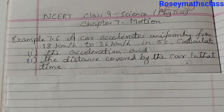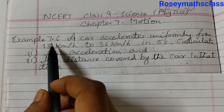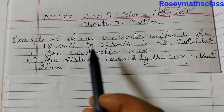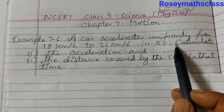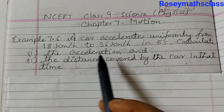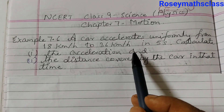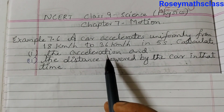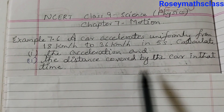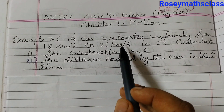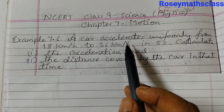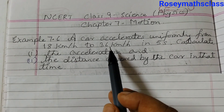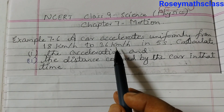Hello everyone, in this video we shall discuss example number 7.6 of class 9 science physics, chapter 7 motion. A car accelerates uniformly from 18 km per hour to 36 km per hour in 5 seconds. Accelerates means it changes its velocity uniformly. The initial velocity is given as 18 km per hour and the final velocity is 36 km per hour.